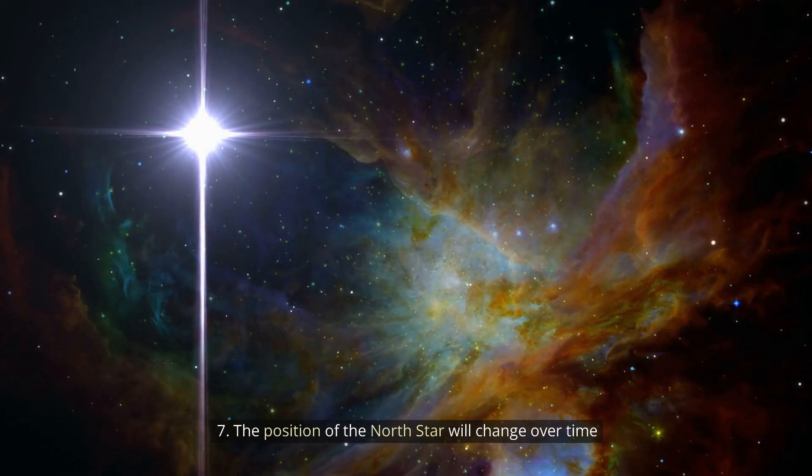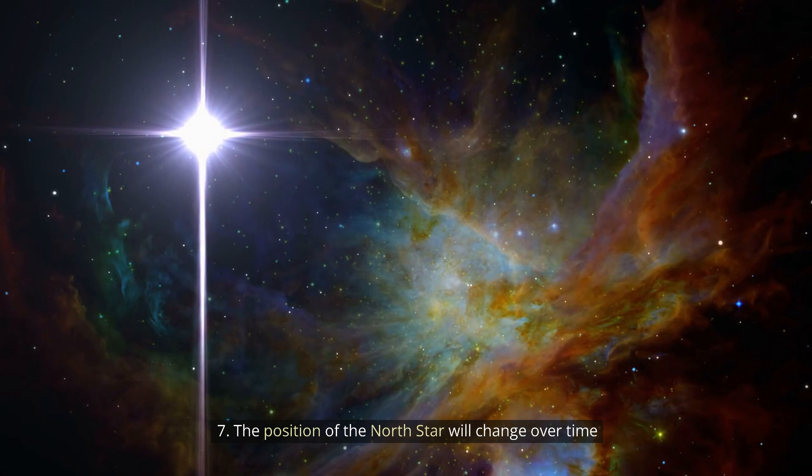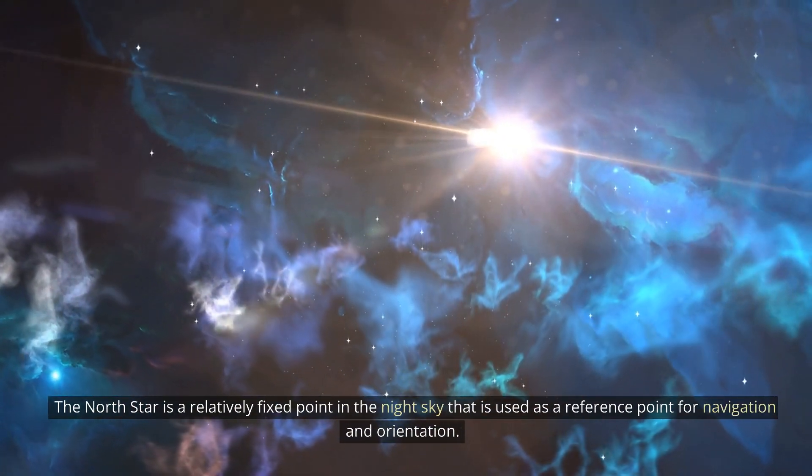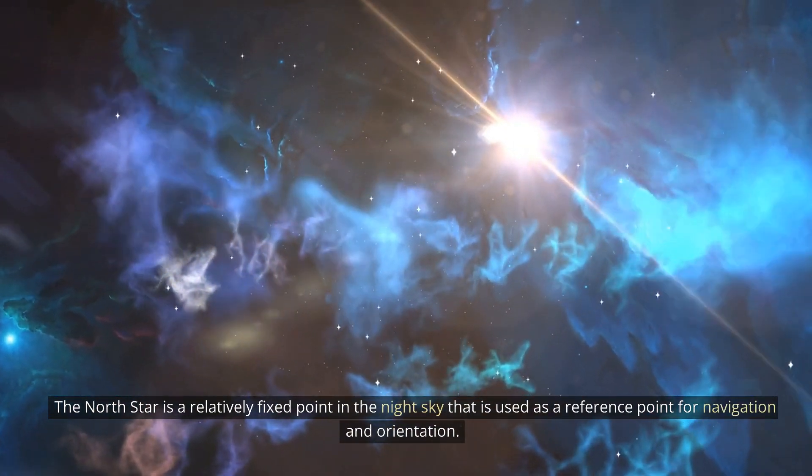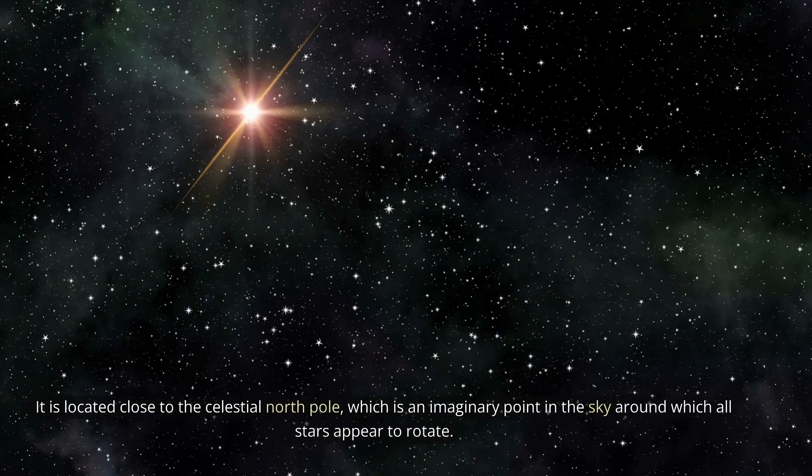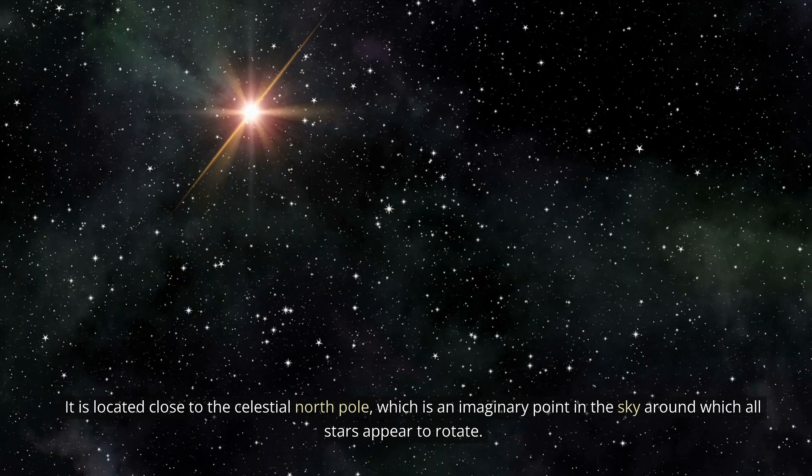7. The position of the North Star will change over time. The position of the North Star, also known as Polaris, will change over time. The North Star is a relatively fixed point in the night sky that is used as a reference point for navigation and orientation. It is located close to the celestial North Pole, which is an imaginary point in the sky around which all stars appear to rotate.